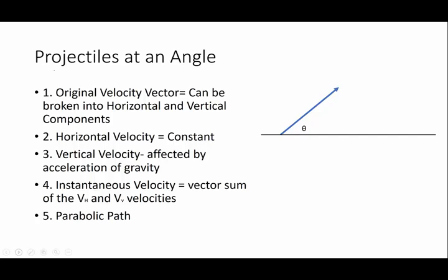So let's say some of this stuff in words. If you have a projectile that is shot at some sort of an angle, things you need to know. One, the original velocity can be broken into horizontal and vertical components. So if this is my original velocity, if I want to find the horizontal and vertical velocities, I'm going to break this into components.